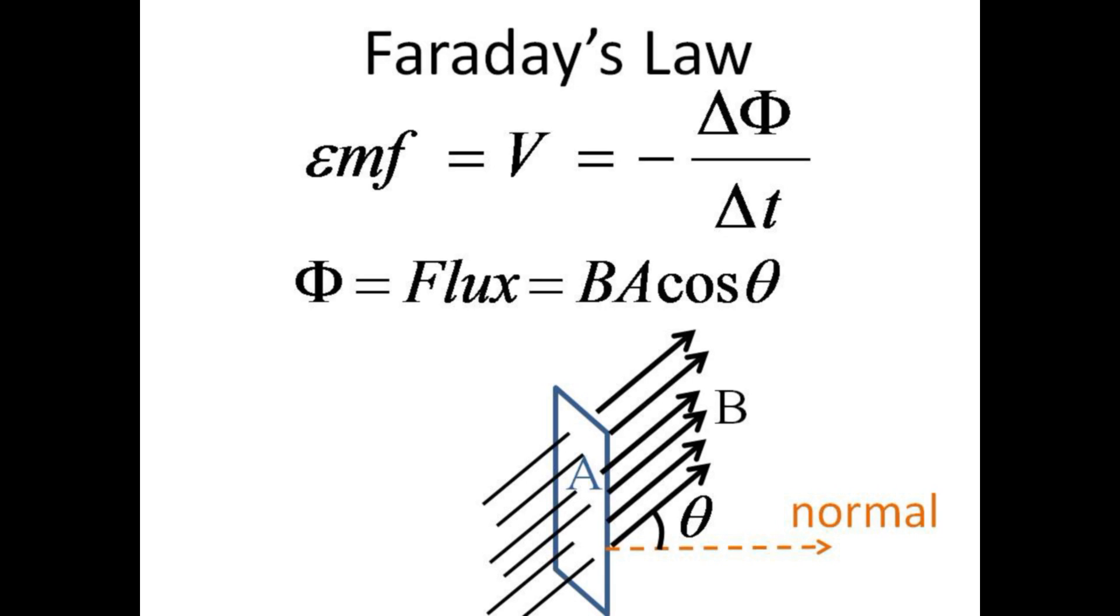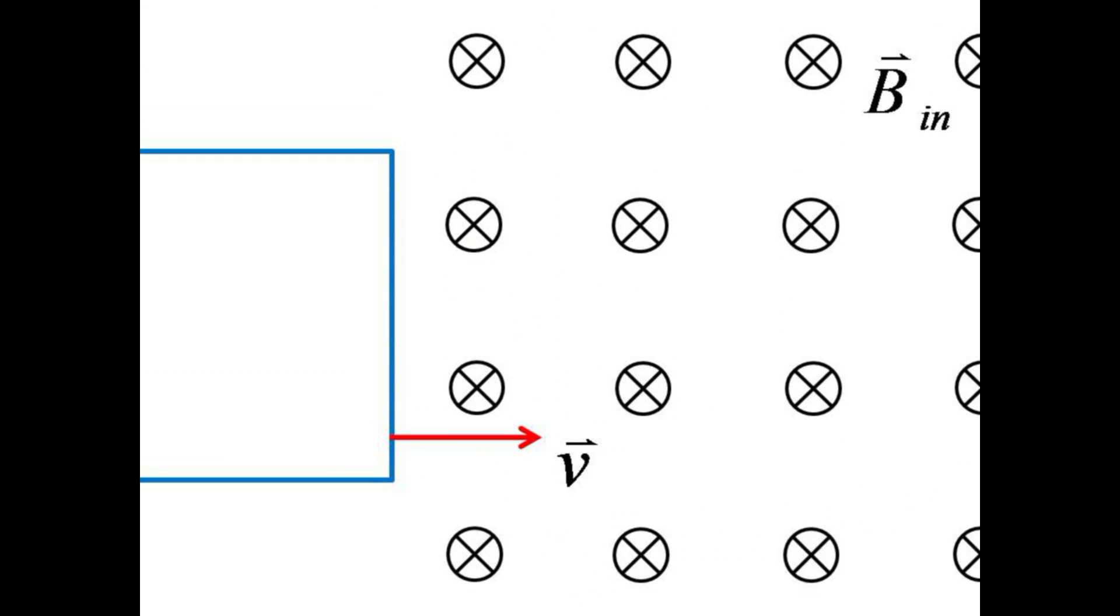In this lab, we will have the B field aligned with the normal. The angle theta will then be zero and the cosine will thus be simply one. Imagine a rectangular loop of wire with a short leading edge moving with speed V from a region of no magnetic field to a region with constant magnetic field B.